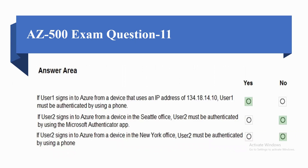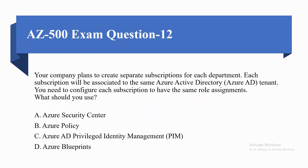The correct answers are: if User 1 signs in from an IP address of 134.18.14.10, User 1 must be authenticated by using a phone — this statement is Yes. If User 2 signs in from the Seattle office, User 2 must be authenticated by using Microsoft Authenticator app — this statement is No. If User 2 signs in from the New York office, User 2 must be authenticated by using a phone — this statement is also No.